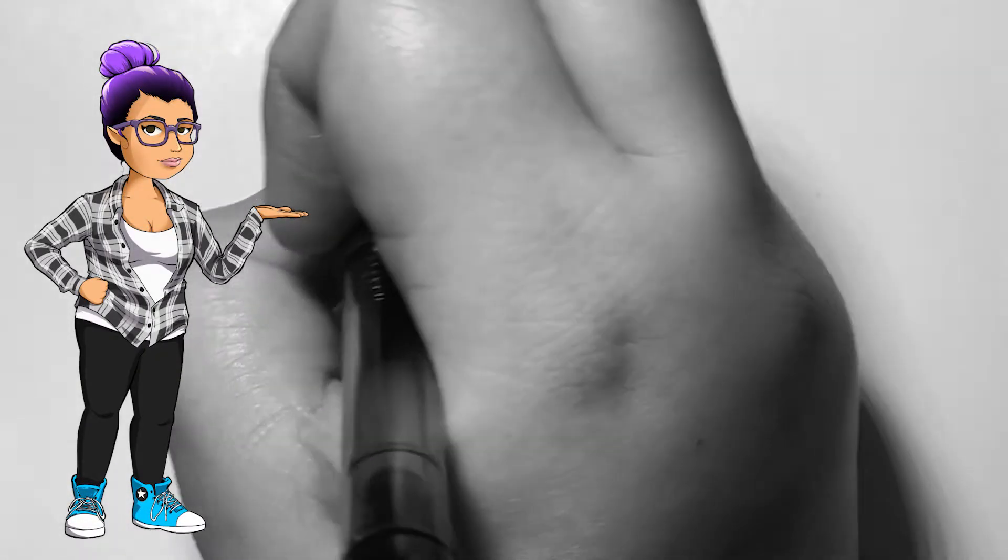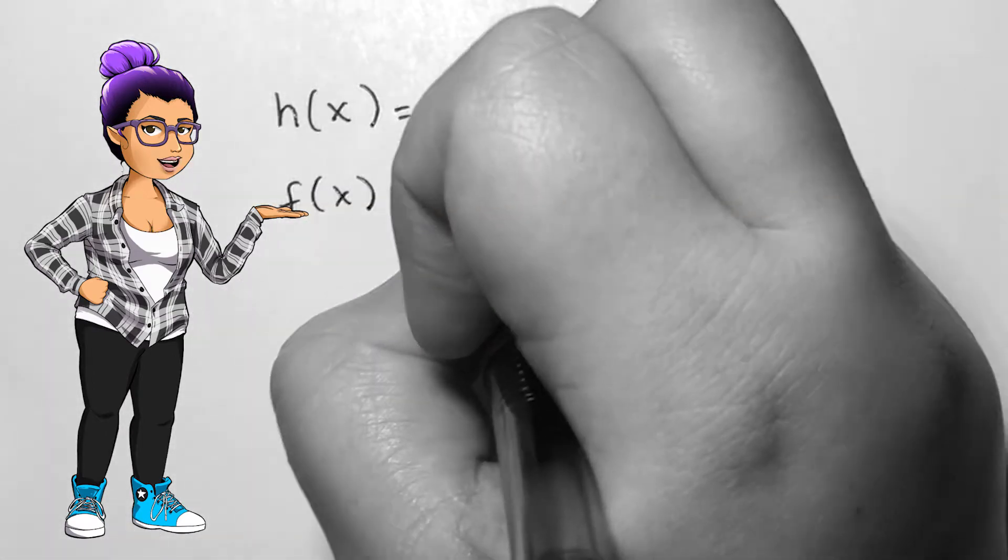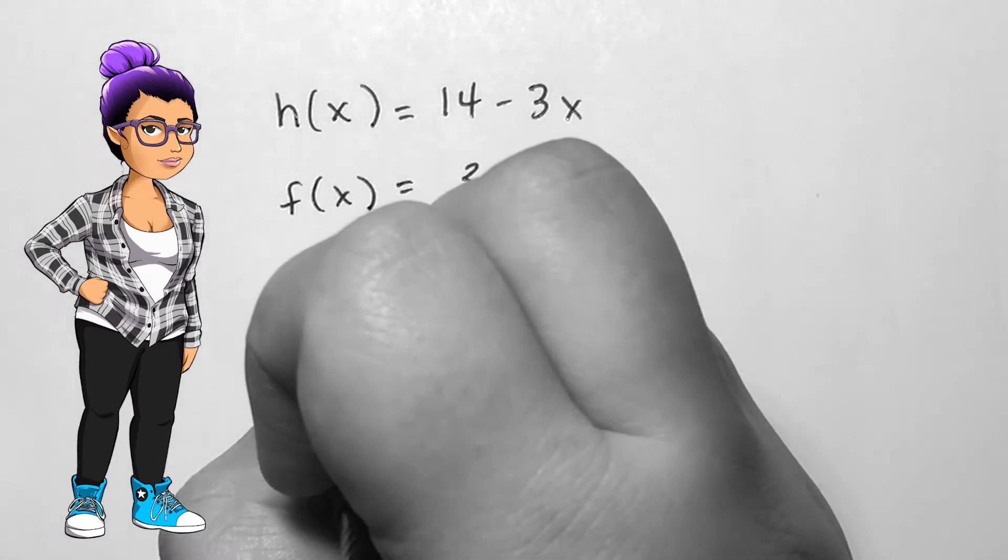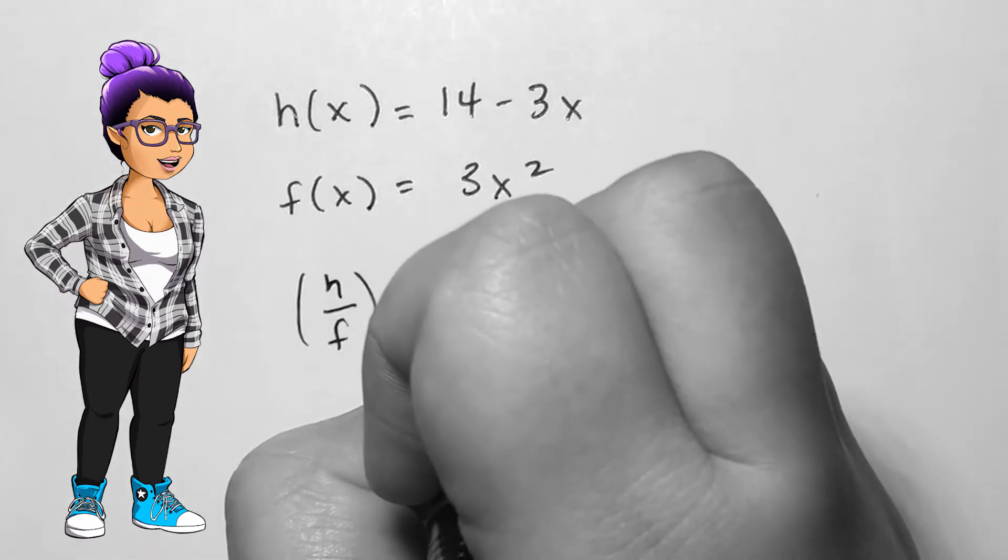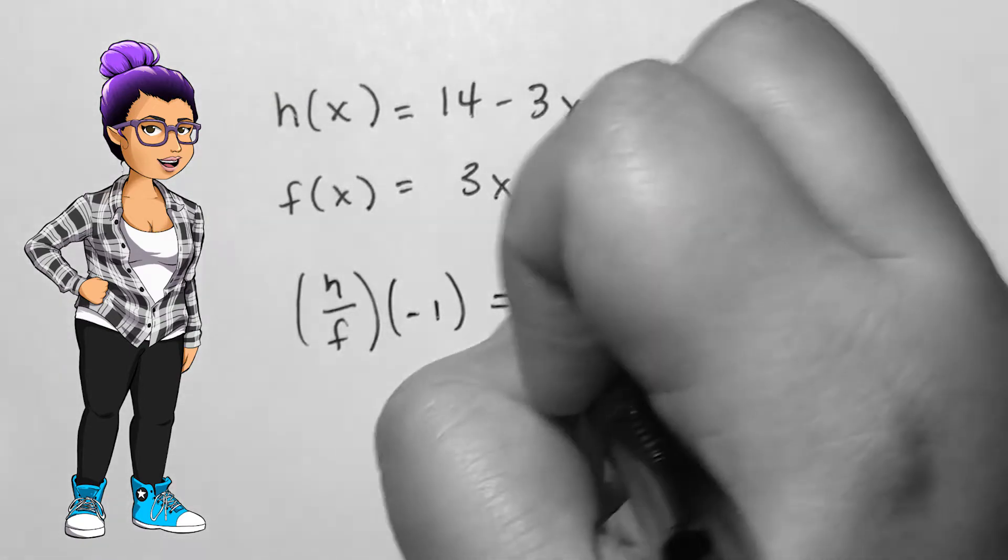If h of x is equal to 14 minus 3x and f of x is equal to 3x squared, then in order to find h divided by f evaluated at negative 1, I need to find h of negative 1, then find f of negative 1 and divide the two results.